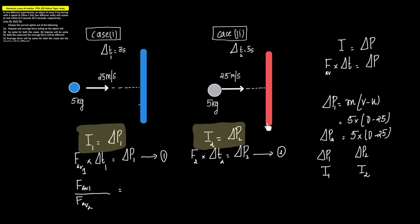Let us first try to solve the impulse part. By the impulse-momentum theorem, impulse is equal to change in momentum, which is otherwise equal to the average force times the change in time. So impulse equals Δp, which is also equal to F_average × Δt.